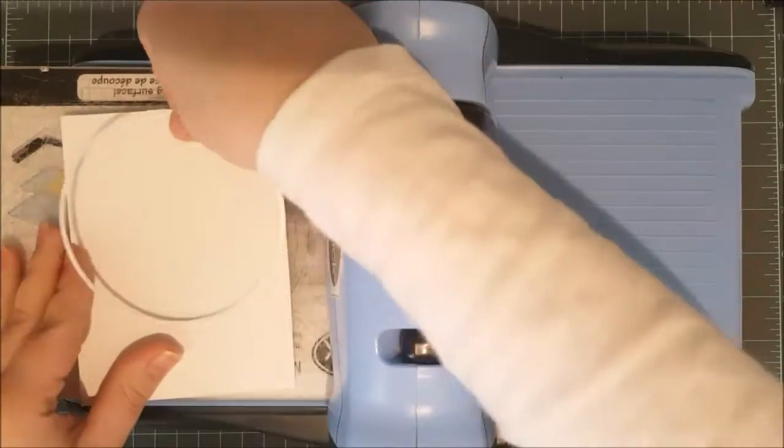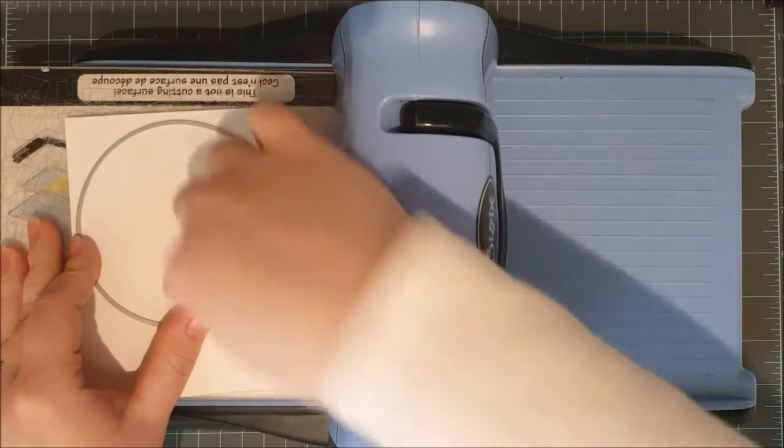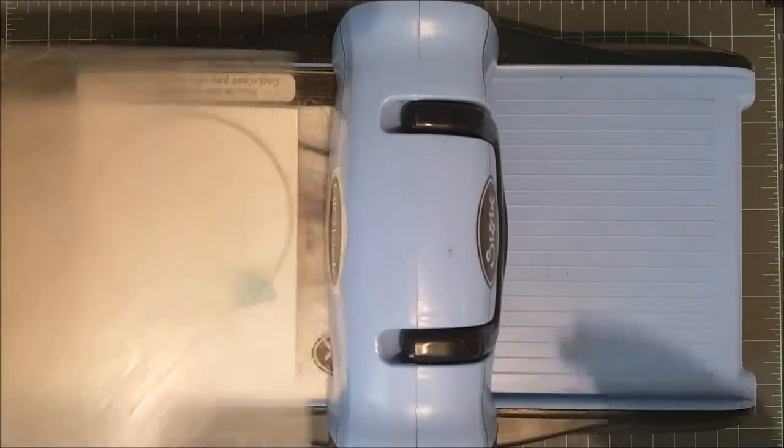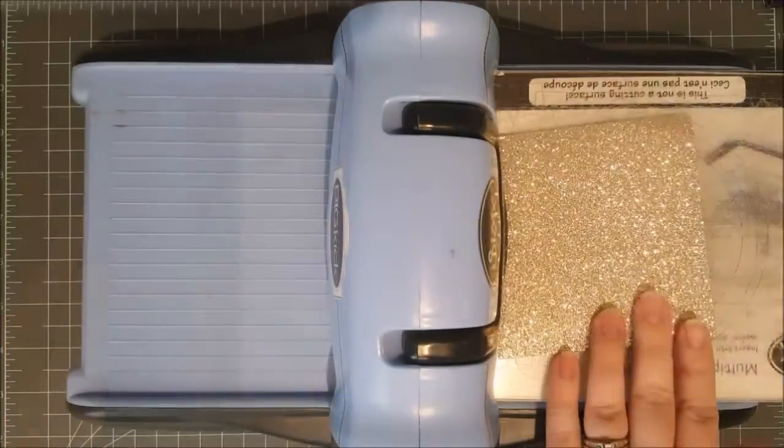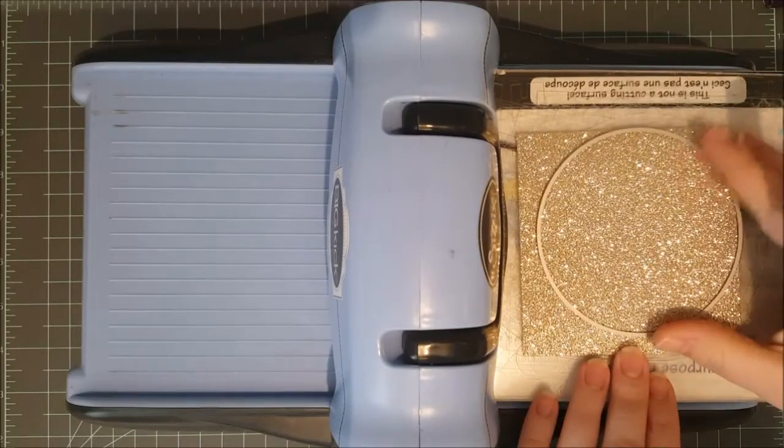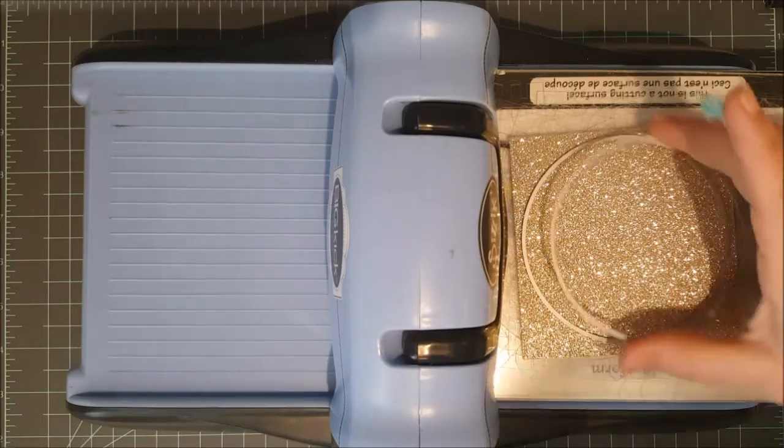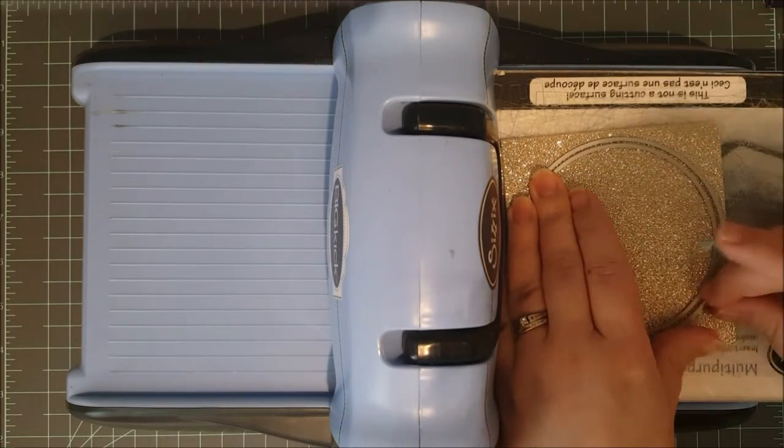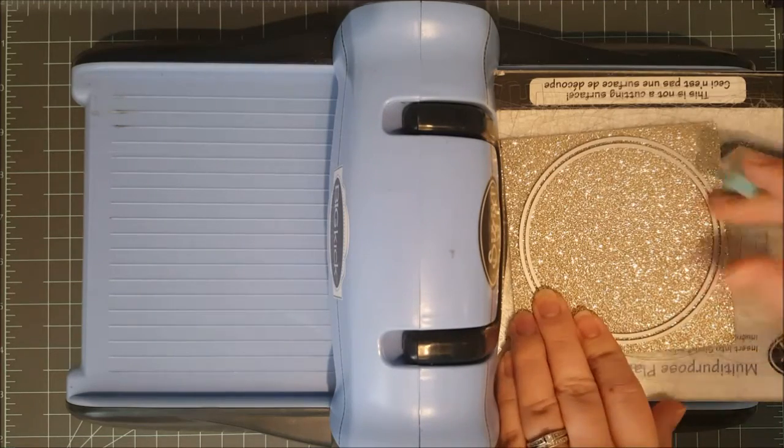I've got my die cut machine out ready to go. I've also got a piece of Canson watercolor paper and a 4 inch circle die from a nesting circle set from Lifestyle Crafts. I'm going to put that down onto my paper and run that through my big kick. Then I'll take this piece of Amber Rose Glitter Cardstock and place the largest circle, the 4 inch circle, onto it and then the next size circle down from it in the nesting die set and nest that inside the larger circle.